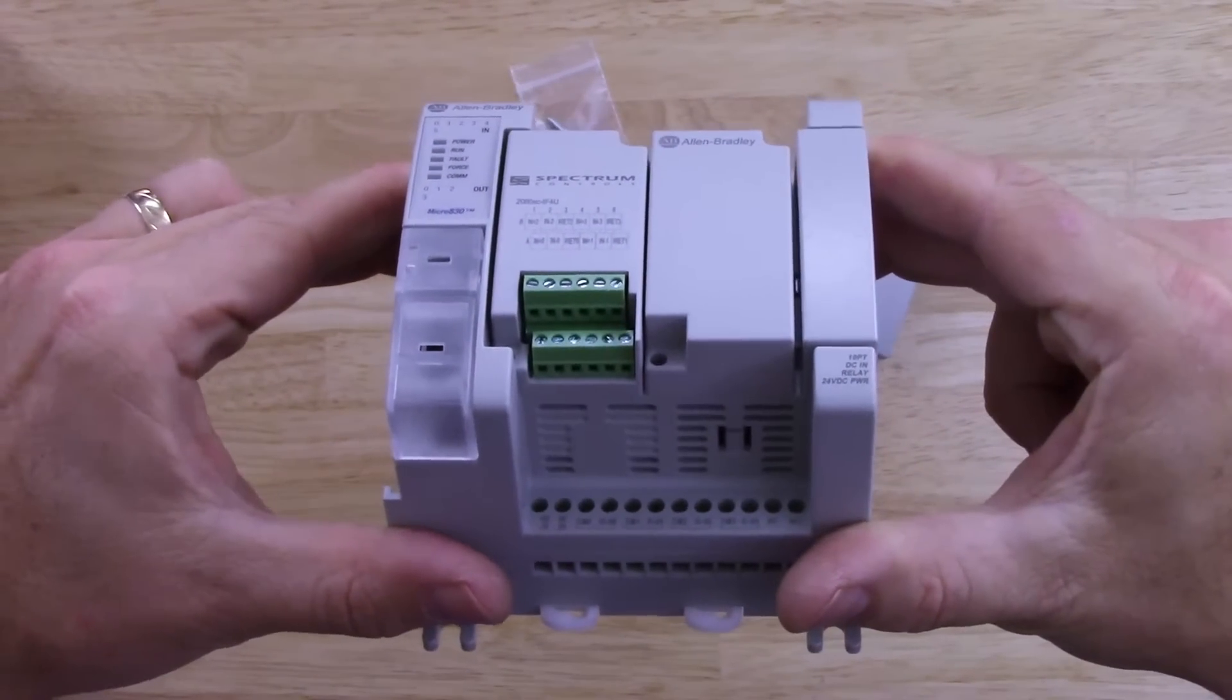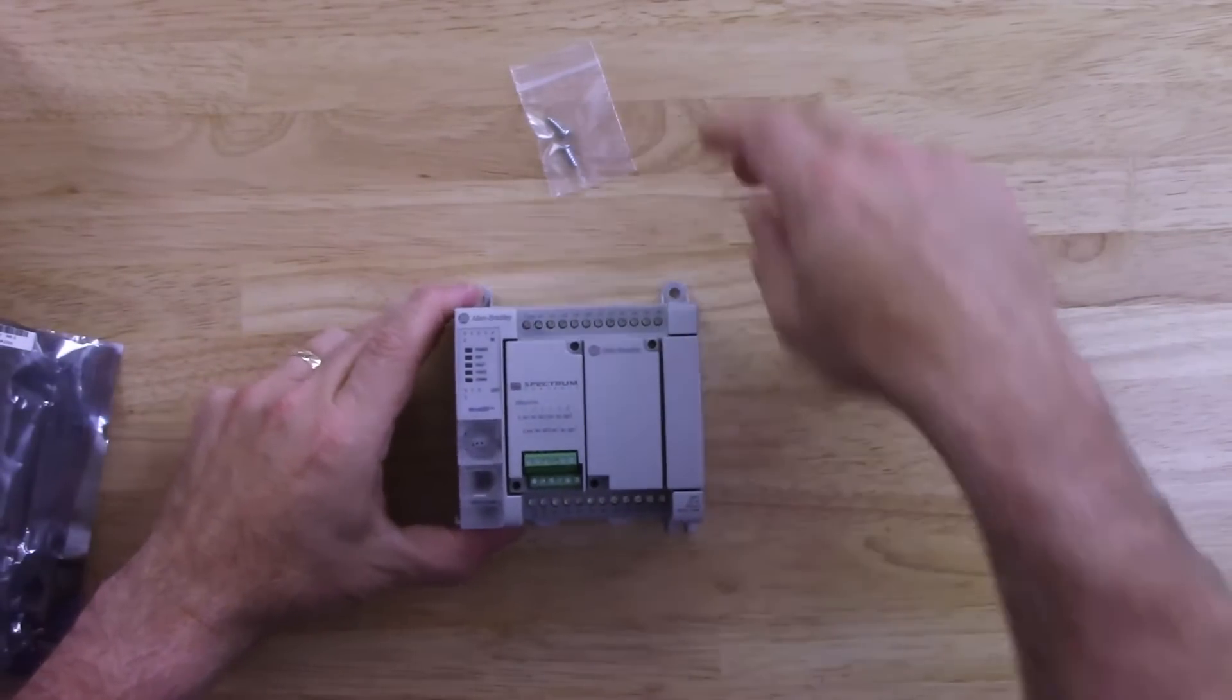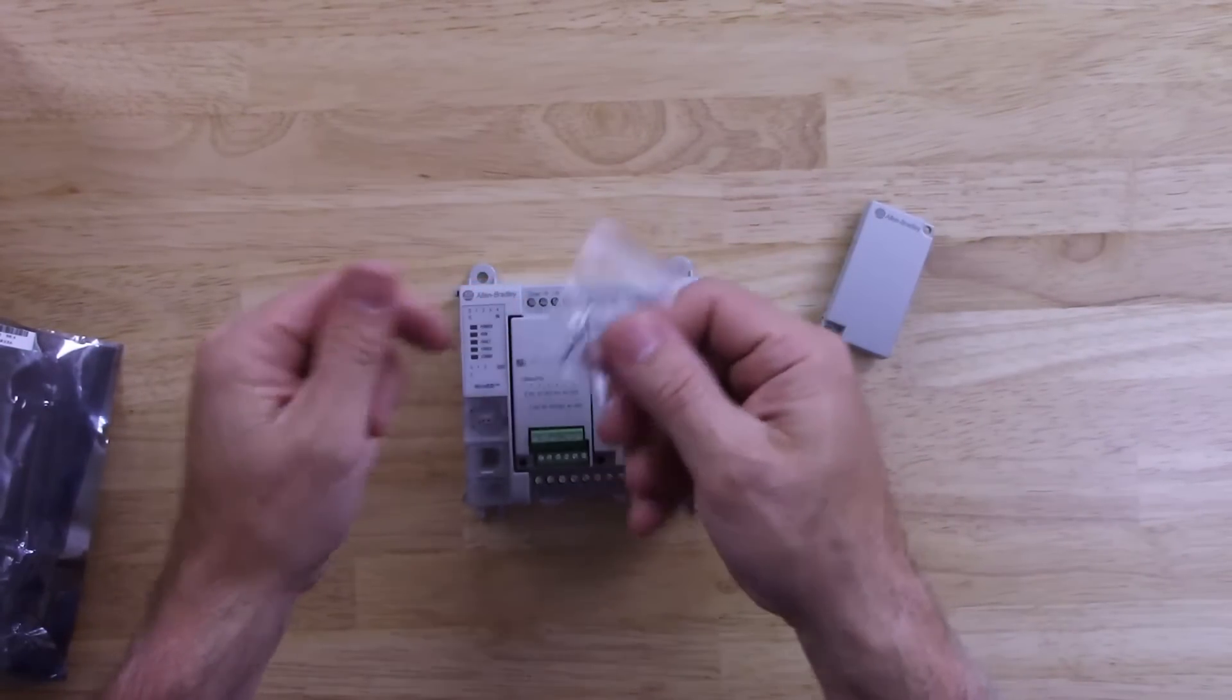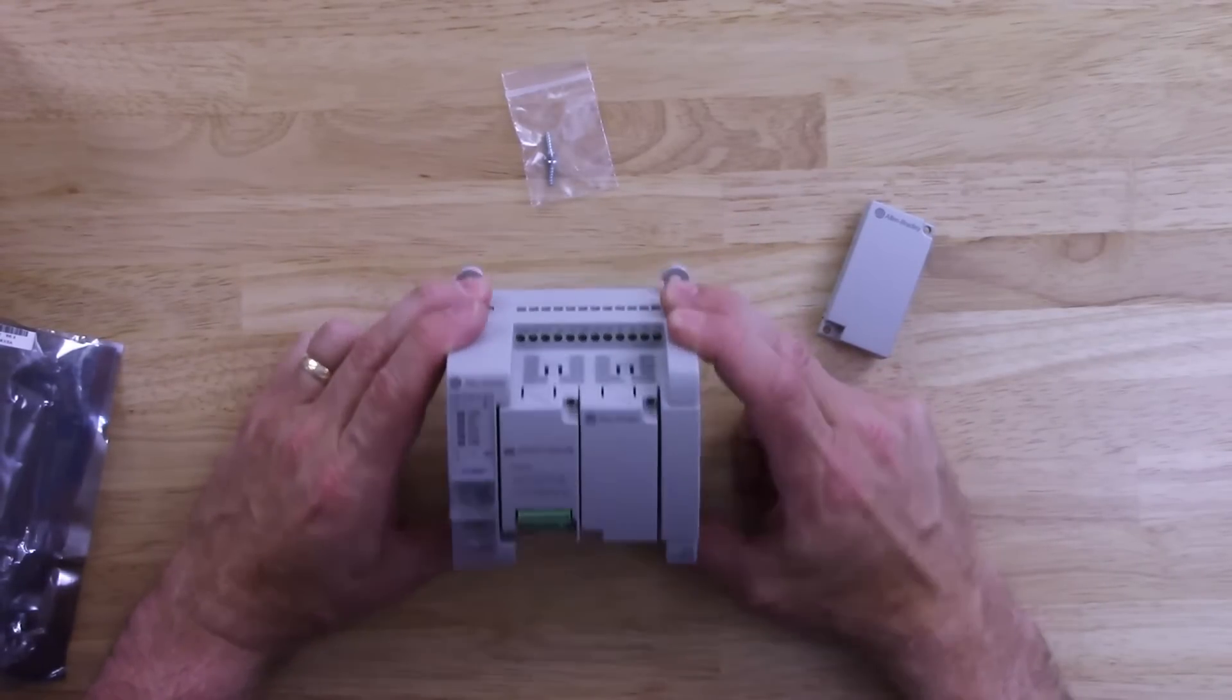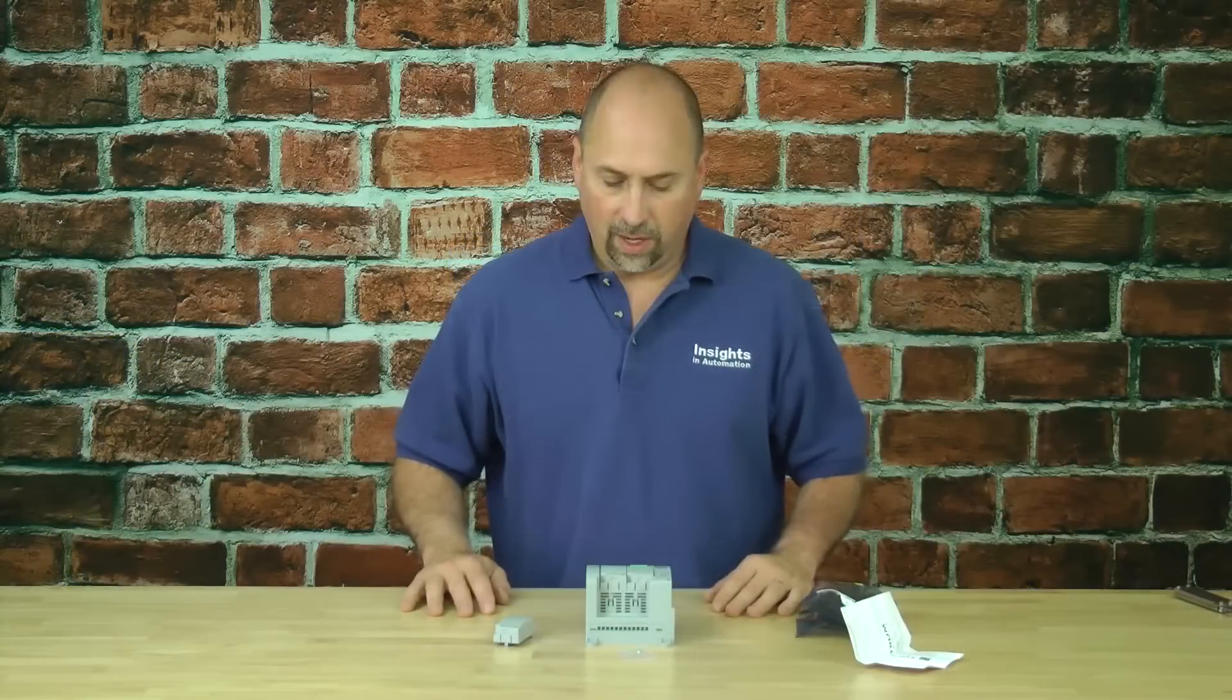And now if I was going to leave her in there, what I would do is use these two screws to secure her. But I'm not going to do that. I'm not going to leave that module in this micro. And that's it for this episode of the Automation Minute.